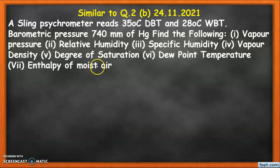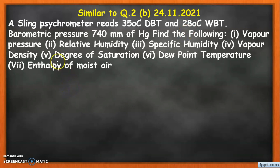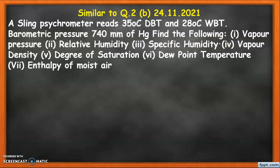Welcome dear students. In this video lecture we are going to solve numerical based on the basic psychrometric properties. This kind of numerical is asked in the question paper of applied thermodynamics in the 24th November 2021 exam. A sling psychrometer reads 35 degree dry bulb temperature and 28 degree wet bulb temperature. The sling psychrometer is a device used to measure DBT and WBT. The barometric pressure is given as 740 millimeter of Hg. We need to find the various psychrometric properties.